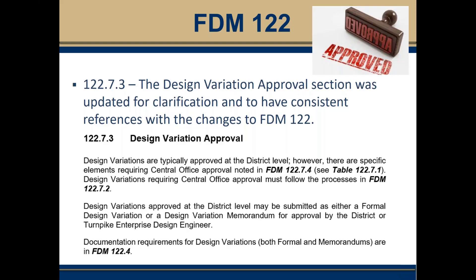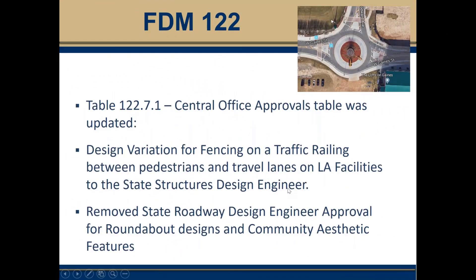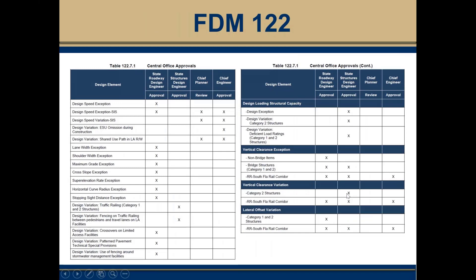Design variations are typically approved at the district level, except for certain elements requiring central office approval. Variations coming to central office must follow the processes of section 122.7.2. As a reminder, design variations can be approved at the district level either as a formal design variation or a design variation memorandum. Table 122.7.1, the central office approvals table, was updated. Design variations for fencing on a traffic railing between pedestrians and travel lanes on limited access facilities now go to the state structures design engineer. The state roadway design engineer was removed for approvals of roundabout designs and community aesthetic features.